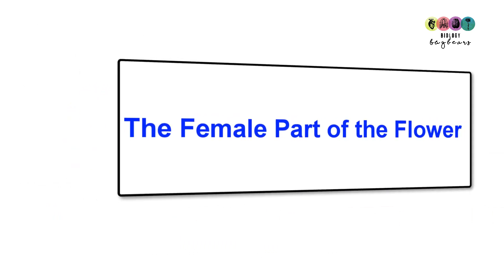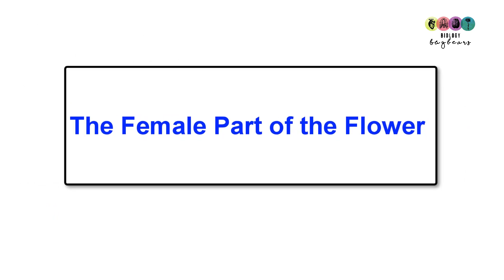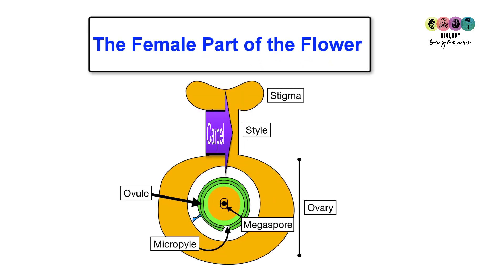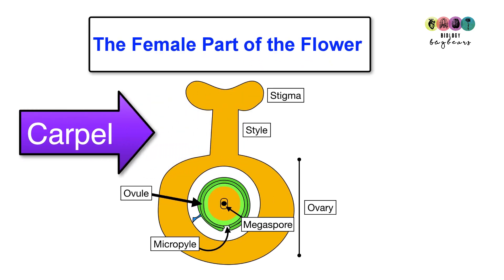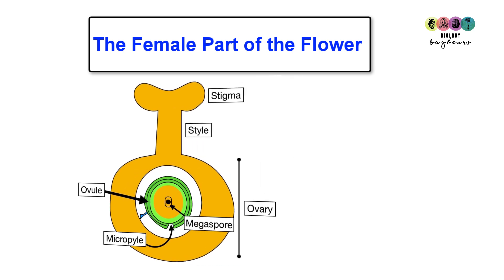The best place to start is with the female part of the flower, which is called the carpel. The carpel is made up of the stigma, the style, and the ovary, and it's the ovule inside the ovary that we're interested in.